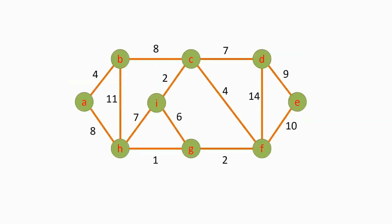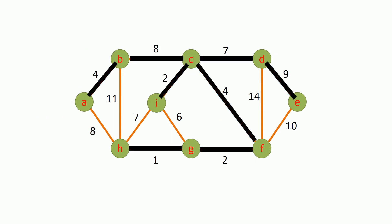For example, for this graph, the minimum weighted spanning tree or MST will look like this. These black color edges form the minimum spanning tree for this graph.